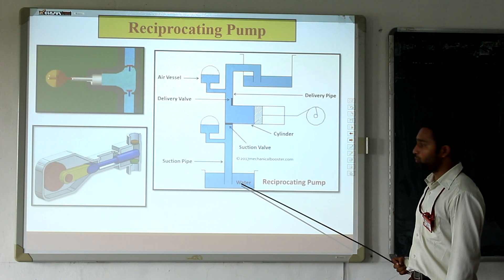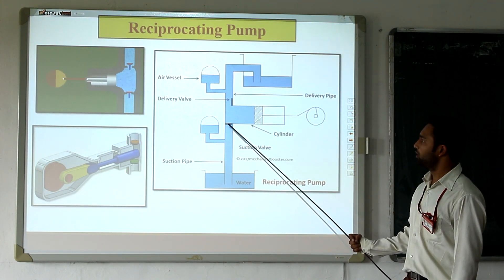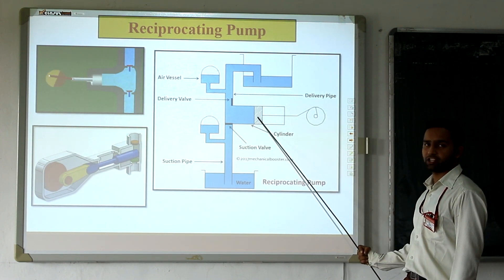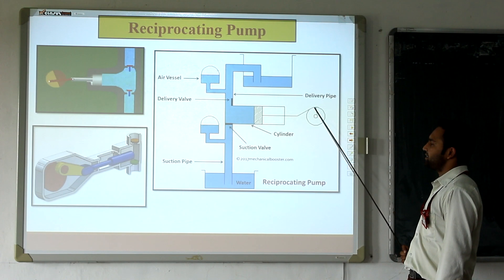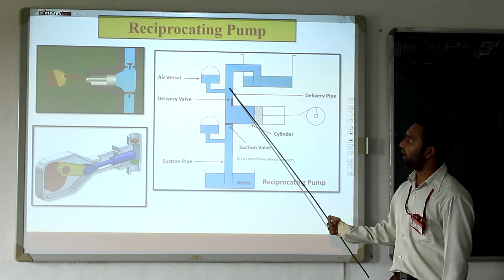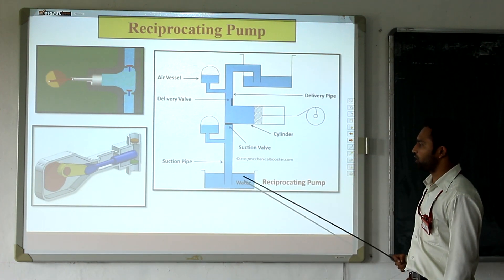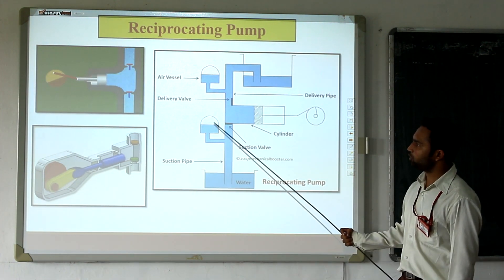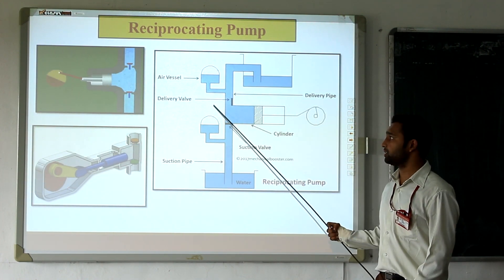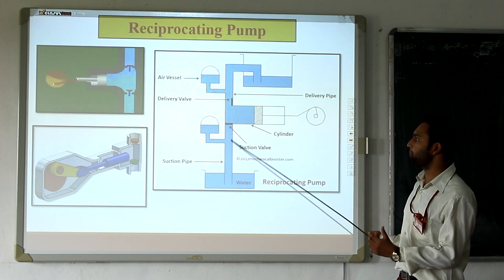Starting from the downside, where the water tank is there, this is the suction pipe, this is the cylinder casing, and inside which the piston is mounted. This is the connecting rod and crank are mounted. This is the delivery valve and this is the delivery pipe. This is the overhead tank and this is the underground tank. Two air vessels are mounted, and basically the function of air vessels is to reduce the friction losses in the pipelines.